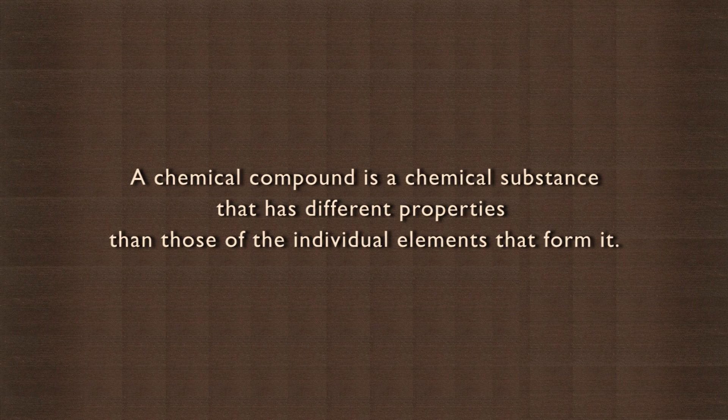A chemical compound is a chemical substance that has different properties than those of the individual elements that form it. Let us make a chemical compound from iron and sulphur to understand this.